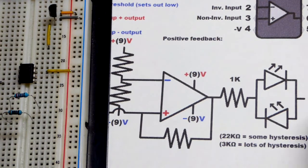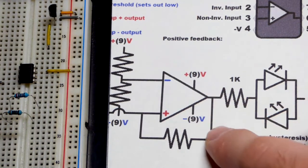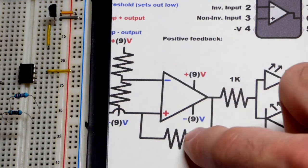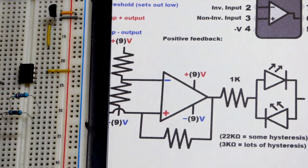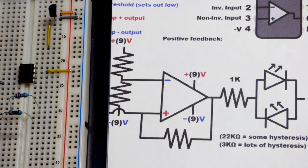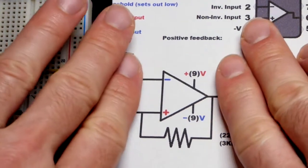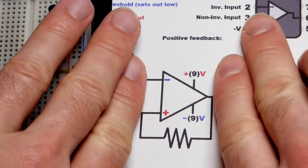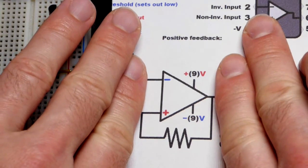When you're looking at an op-amp schematic and you see something like this, that indicates you have hysteresis—we're getting some positive feedback to the non-inverting input. That's the basic schematic symbol.